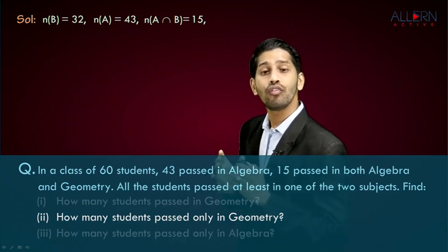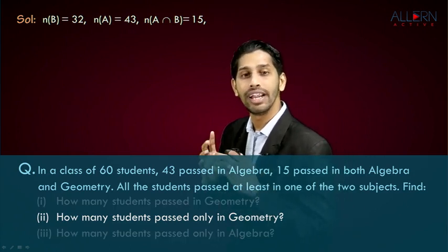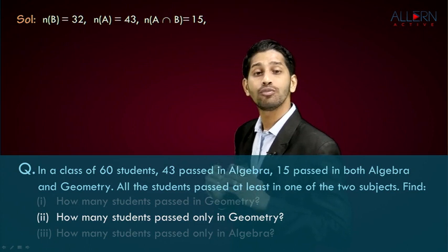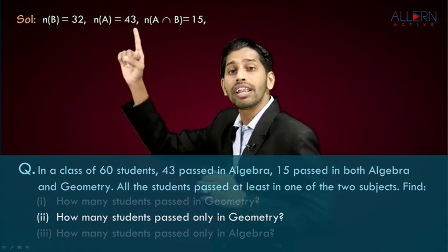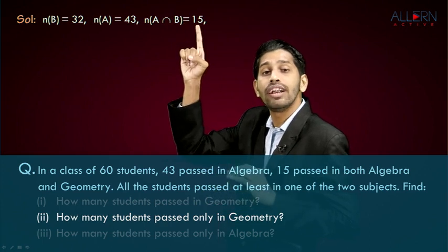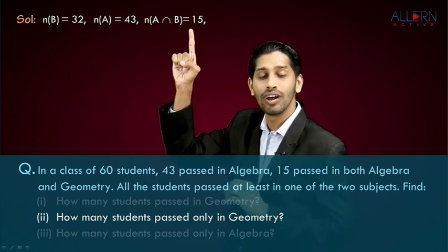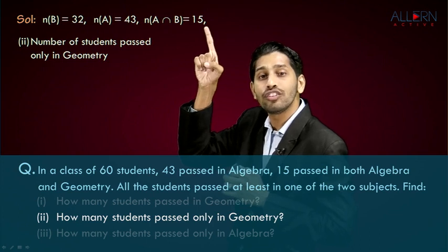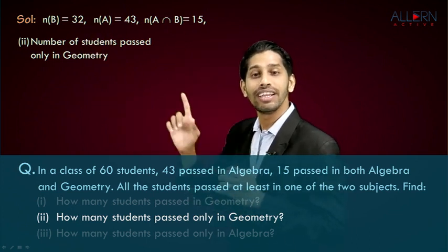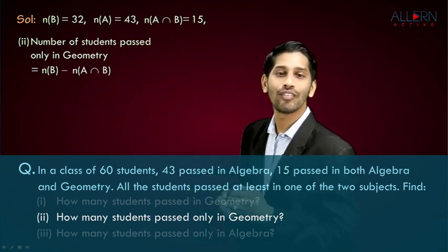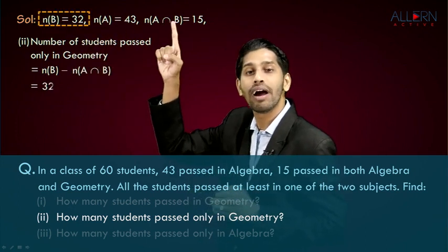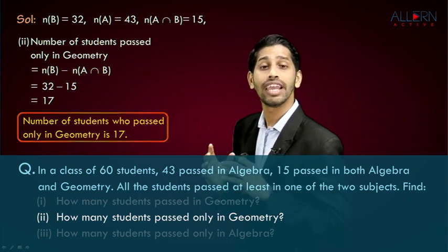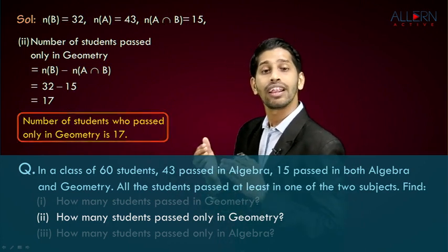The second question asks how many students passed only in geometry. N(B) = 32, meaning 32 students passed in geometry, but out of these 32, there are 15 students who also passed in algebra. So to find students who passed only in geometry, we subtract: N(B) − N(A ∩ B) = 32 − 15 = 17. The number of students who passed in geometry only is 17. That completes our second sub-question.